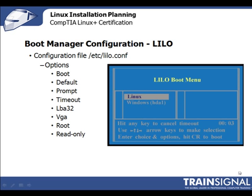Lilo used to be the default bootloader for many Linux distributions, but recently it's been replaced by Grub. Bootloaders are installed during the installation process. Previously, in some distributions, you could select which bootloader to load, but now Grub is installed by default. The image on the screen represents a sample Lilo screen. Lilo can also be installed on an existing system by typing 'lilo' from a command prompt, but you first need to set up its configuration file.